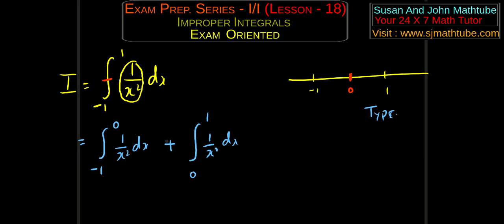Now as before, I am going to go a little bit behind this and a little bit ahead. I am going to put h prime and h here. And here I will write limit h tends to 0. And here I will write limit h prime tends to 0.